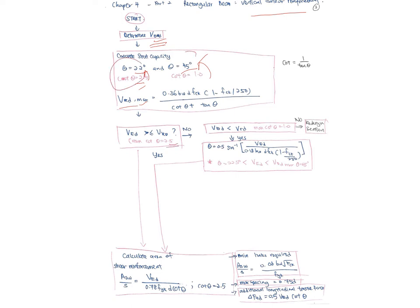If VEd is less than VRd,max at cot θ = 2.5, proceed with that angle. If not, check VRd,max at cot θ = 1.0. If VEd is still greater than VRd,max at cot θ = 1, you need to totally redesign the section. If VEd is less than VRd,max at cot θ = 1, substitute and calculate the required equations.